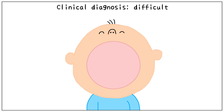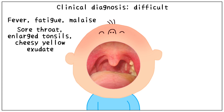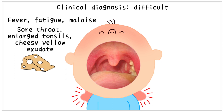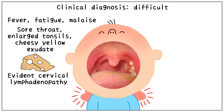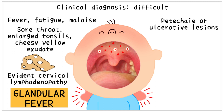Clinical diagnosis of infectious mononucleosis is usually difficult. It is more common in children and young adults. Fever, fatigue, and malaise are the first signs of disease. It is characterized by sore throat, enlarged tonsils, and copious cheesy yellow exudate. As you can see in this picture, it causes very evident cervical lymphadenopathy, or swelling of the cervical lymph nodes, which gives it the name glandular fever. Sometimes, fatigue or ulcerative lesions may be seen on the mucosa at the junction of the hard and soft palate.